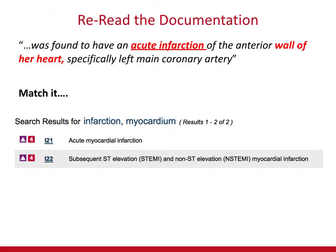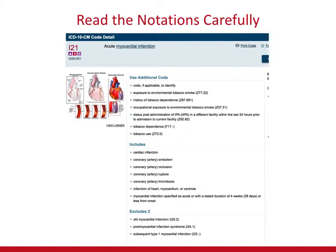We have two choices — which one will we choose? Go back to the documentation. The physician stated she has an acute infarction of the wall of her heart, which in medical terminology is an acute — meaning severe — myocardial infarction, which is an exact match. That means I-21 is where you're headed. Again, notice the red box with the four, telling you an additional character is absolutely required. Click on I-21, which is underlined as a link, and it will bring you to the notations for this code category.